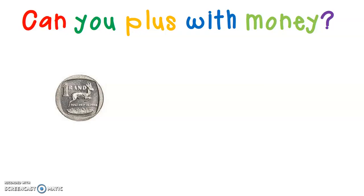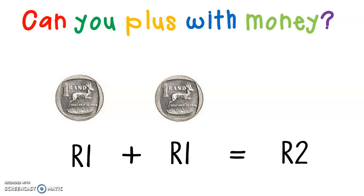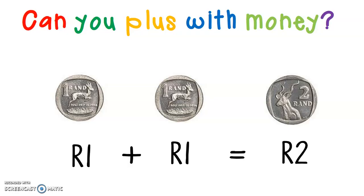Here I have a 1 Rand and a 1 Rand. Let's add them together. 1 Rand plus 1 Rand equals 2 Rand. And do we get a 2 Rand coin? Yes, we do. A 2 Rand coin can be divided into 2 1 Rand coins, and 2 1 Rand coins equals a 2 Rand.